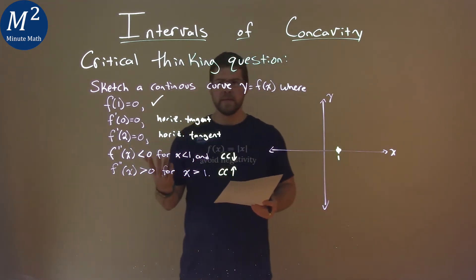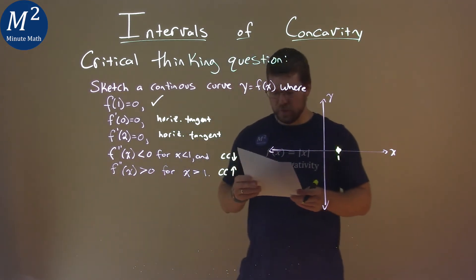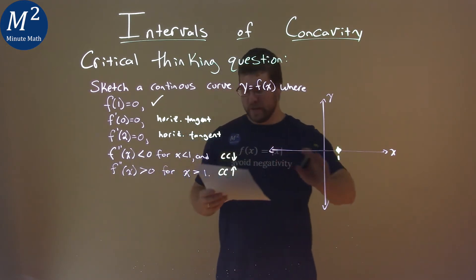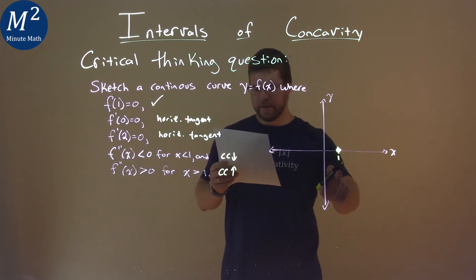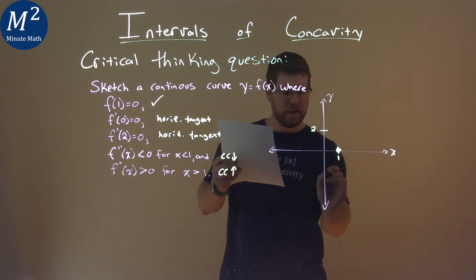So what's going on? Well, we have a horizontal tangent at 0 and at 2. But we're concave down from negative infinity all the way to 1 right here. And that's going to be our point of inflection. So watch this. I'm going to pick a point. I'll put it up here. Let's call that 2. And then down here negative 2.